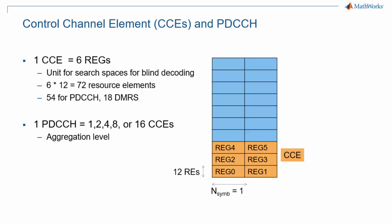One control channel element corresponds to six resource element groups. This means that one CCE includes 6 times 12 equals 72 resource elements. Of those, 54 are available for the PDCCH itself, and 18 are reserved for associated DMRS, or demodulation reference symbols, which let the UE perform channel estimation, which accounts for propagation channel effects, including beamforming.